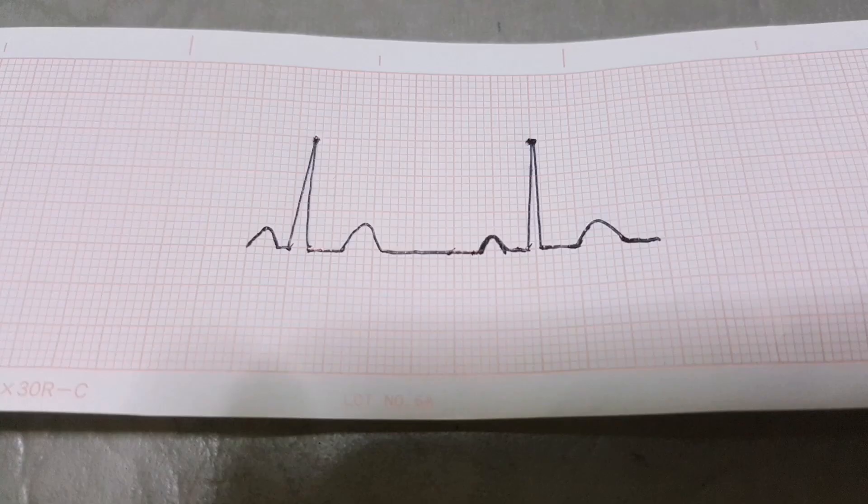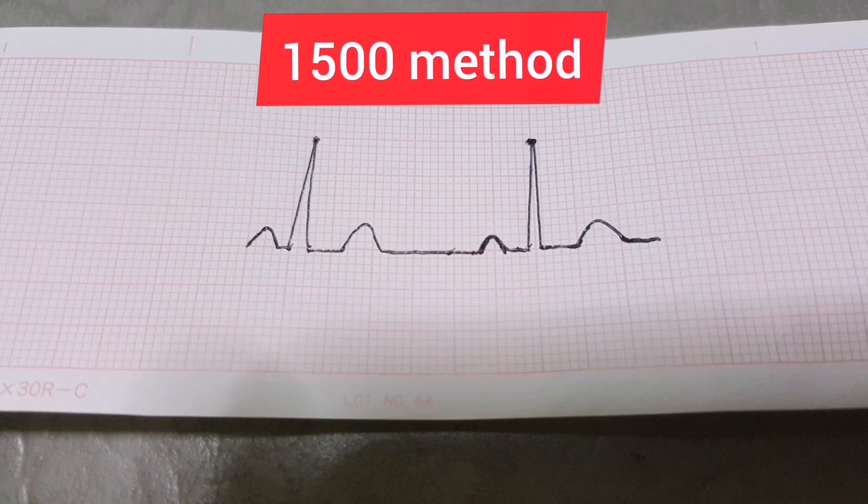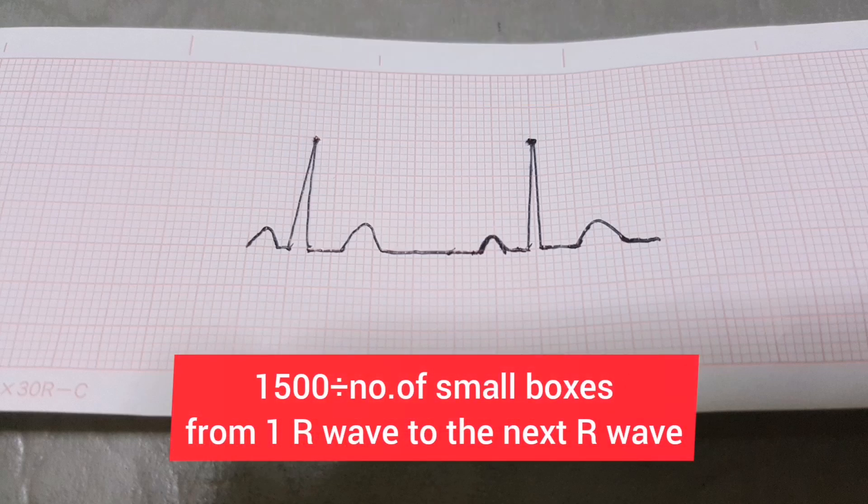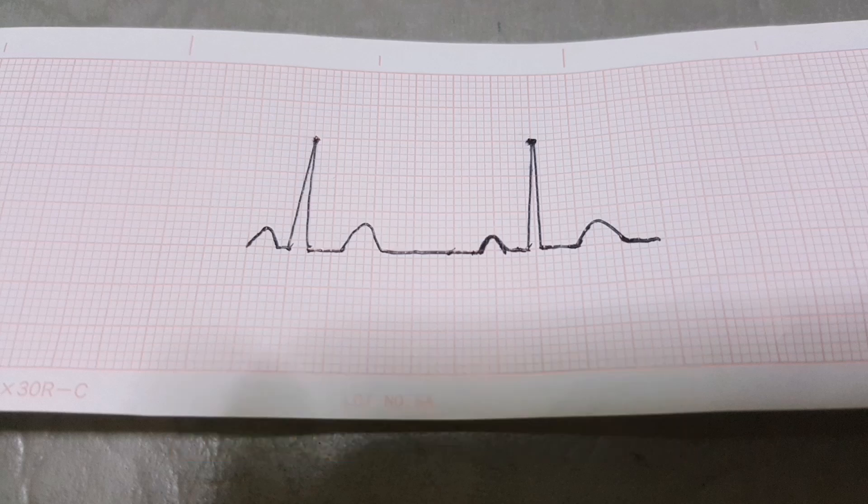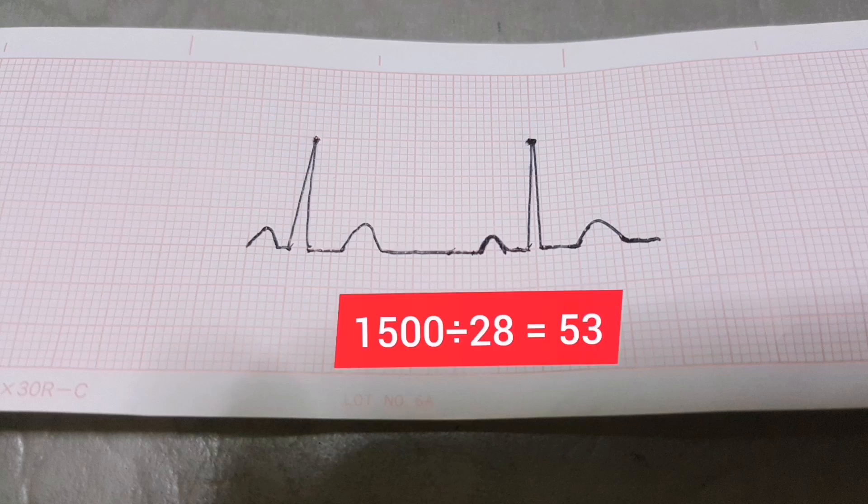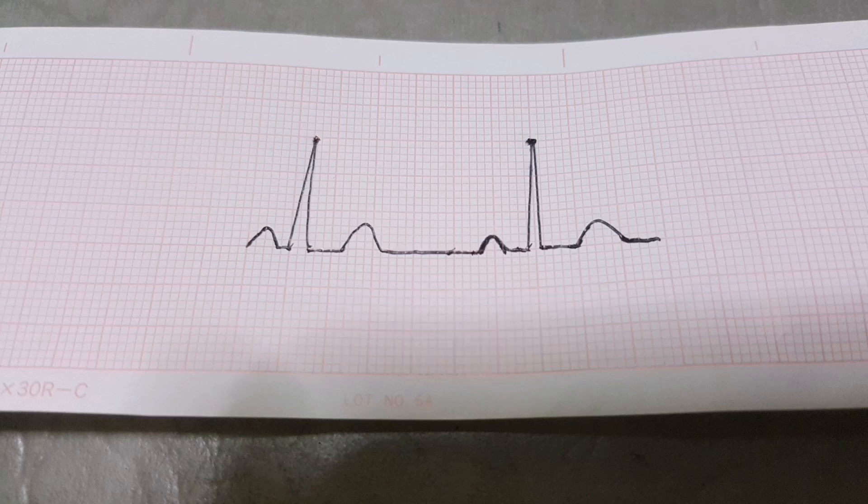The last method is the 1,500 method. It is the most accurate of all. You just have to count the number of small boxes from one R-wave horizontally to another R-wave. In this example, there are 28 boxes from one R-wave to the next R-wave. Therefore, 1,500 divided by 28 is equal to 56, and the tracing is sinus bradycardia.